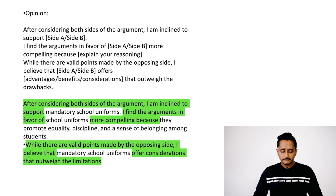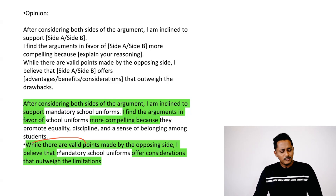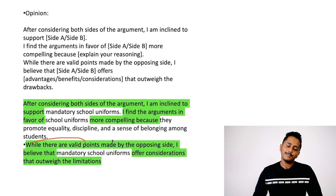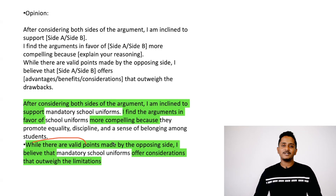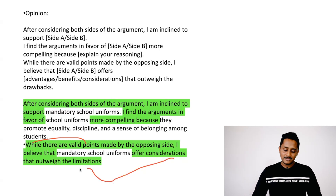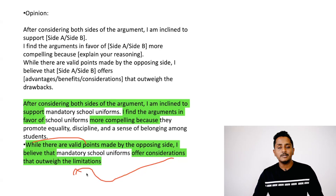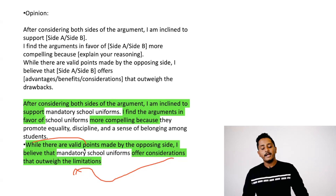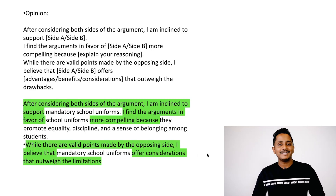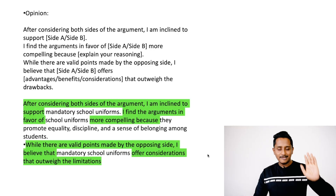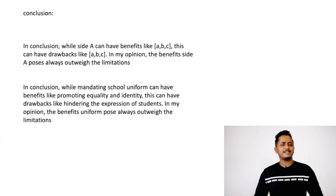'While there are valid points made by the opposing side, such as the cost incurred in buying a uniform or stifling the creativity and freedom of expression, I believe that mandatory school uniforms offer considerations or advantages that outweigh the limitations.' Exact copy-paste — things will work. The template actually helps. Just follow the structure exactly; do not leave any letter, word, or sentence from it.